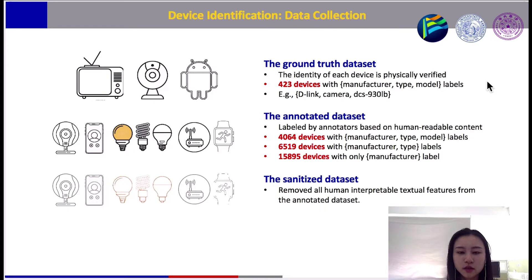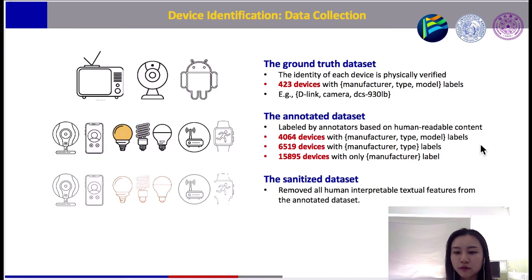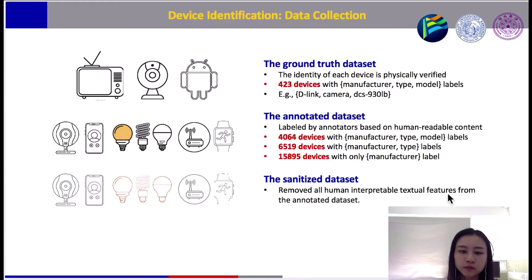We attempted to label the devices. First, we were able to physically approach about 400 devices and label each with manufacturer, type, and model — this is the ground truth dataset. Next, we used human intelligence to examine readable content in these packets and annotated about 4,000 devices with all three labels. In addition, we annotated over 6,000 devices with manufacturer and type but not the exact model, and left over 15,000 devices with only manufacturer. Finally, we took the annotated dataset and removed all human-interpretable content from the packets — we call this the sanitized dataset.